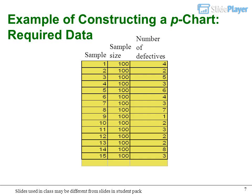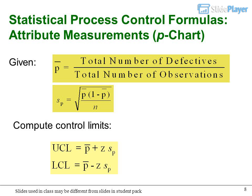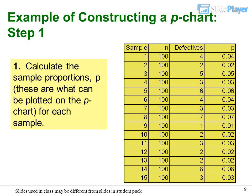Example of constructing a P-chart. Required data: sample size and number of defectives. Statistical process control formulas for attribute measurements. Step 1: Calculate the sample proportions P. These are what can be plotted on the P-chart for each sample.